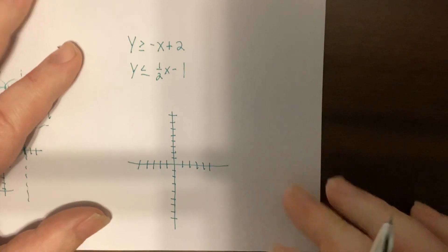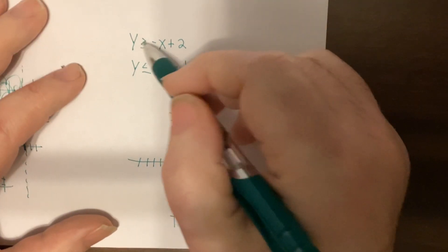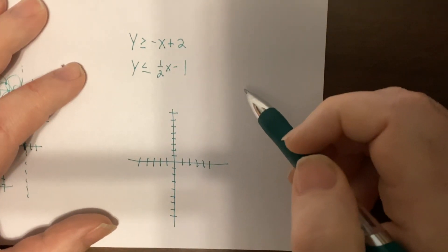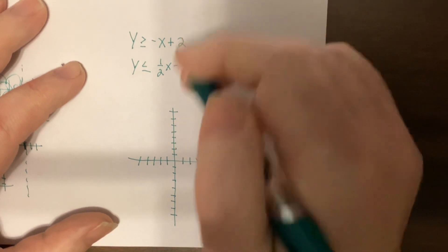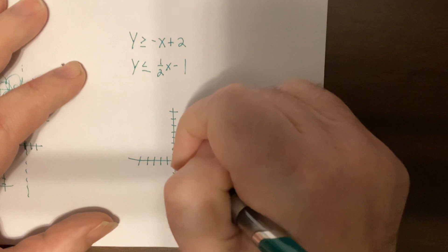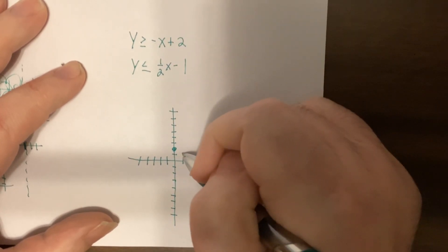For this one, again, it's solved for y, so I would do slope intercept. Y-intercept is two. Slope is negative one. So it's down one, right one, down one, right one.